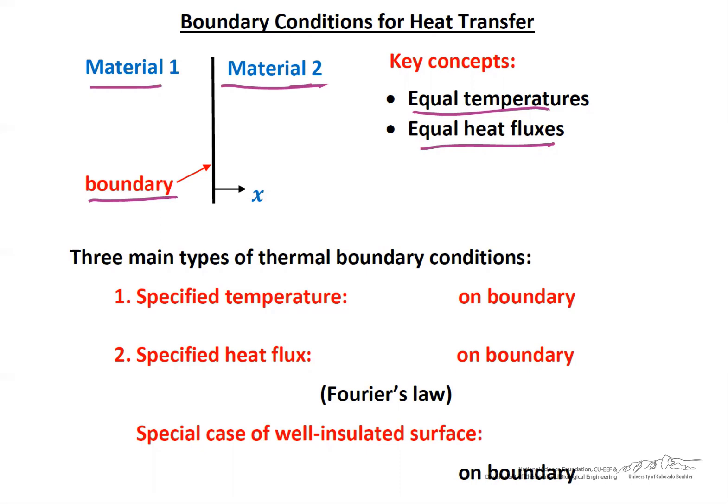Similarly, if the heat fluxes weren't equal — say there was more heat coming from the left in material one to the boundary than leaving into material two — there'd be an accumulation of heat at the boundary, and if the boundary was very thin, that would mean a very, very high change in temperature. Both of those are physically unrealistic, so in all practical purposes we have equal temperature and equal heat fluxes at the boundary.